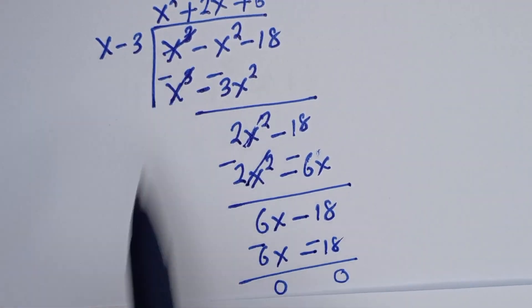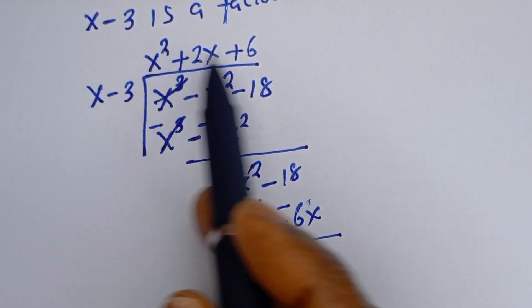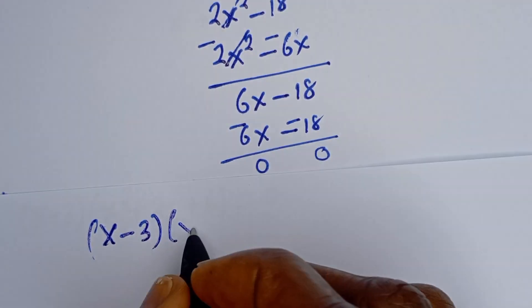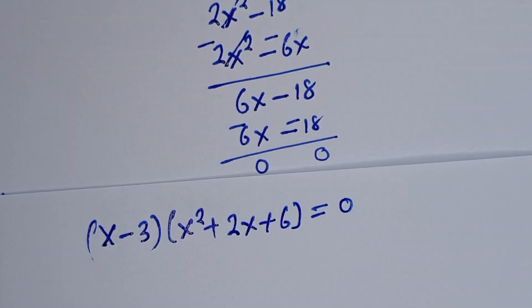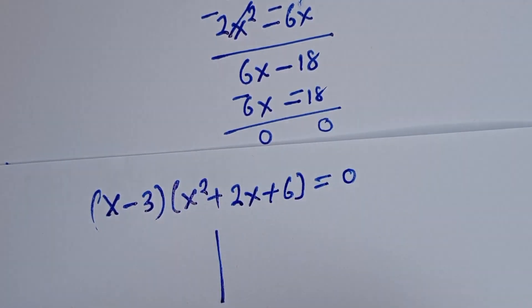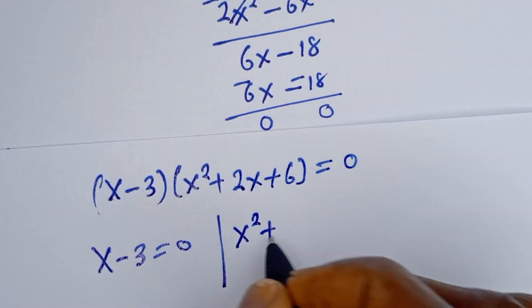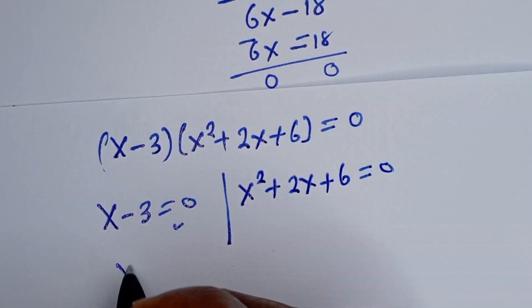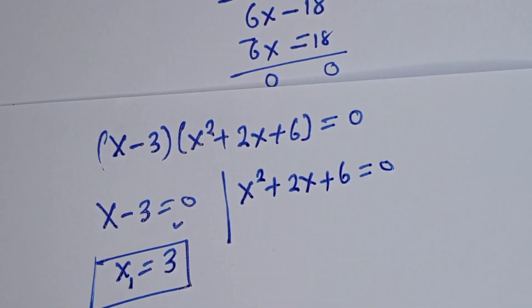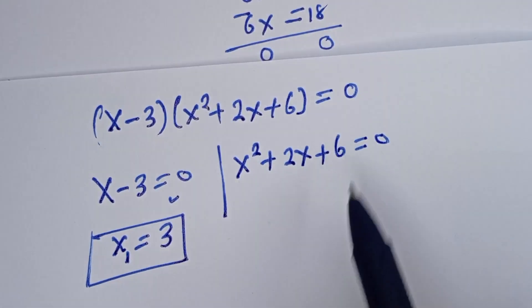Therefore we have (s minus 3) times (s squared plus 2s plus 6) equals 0. There are two cases. The first case is s minus 3 equals 0, and the second case is s squared plus 2s plus 6 equals 0. From the first case, s is equal to 3 — let's call this s1, which is the first root. To solve for the other roots, let's solve the quadratic equation s squared plus 2s plus 6 using the quadratic formula.